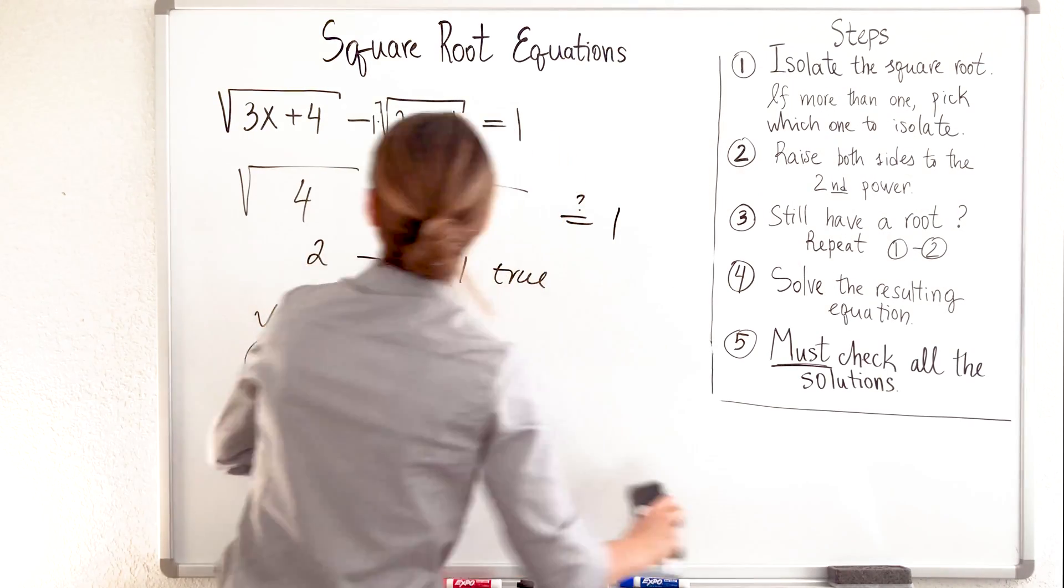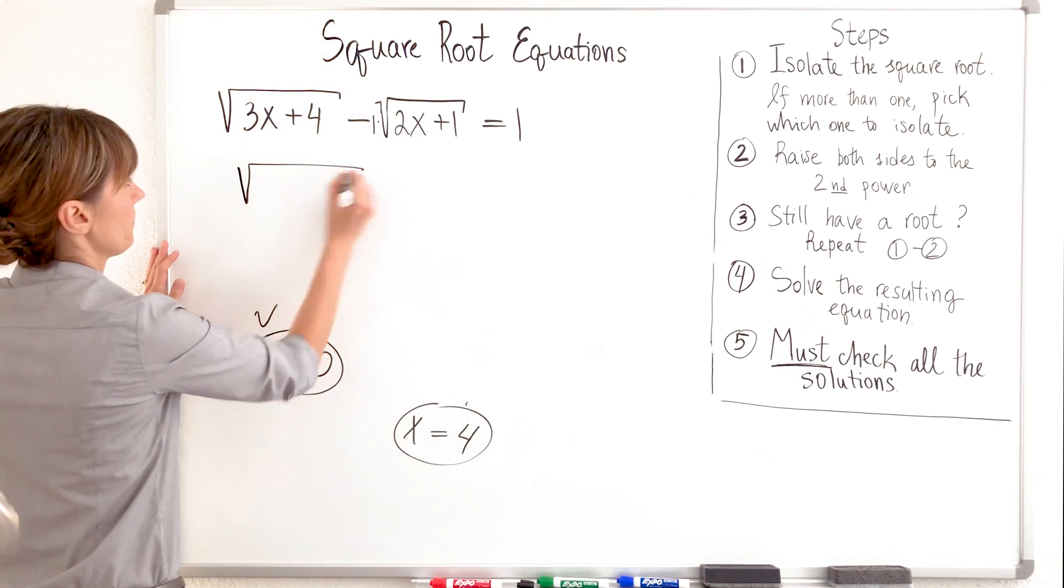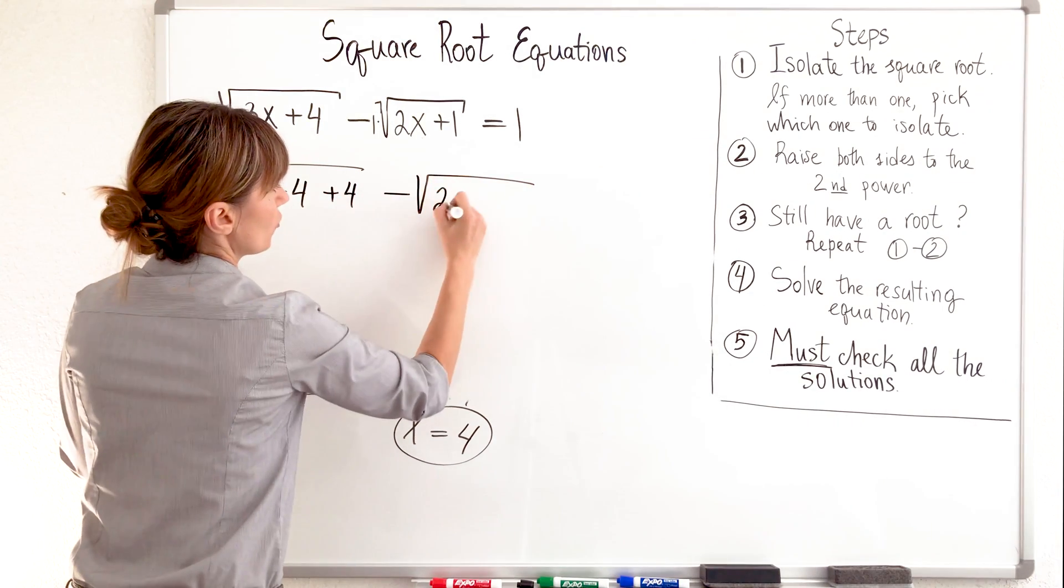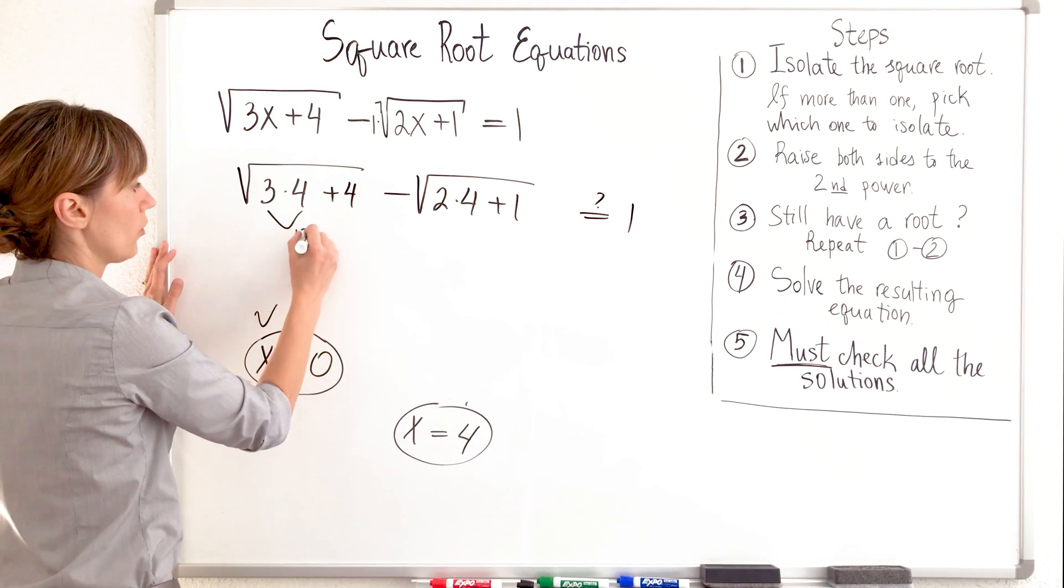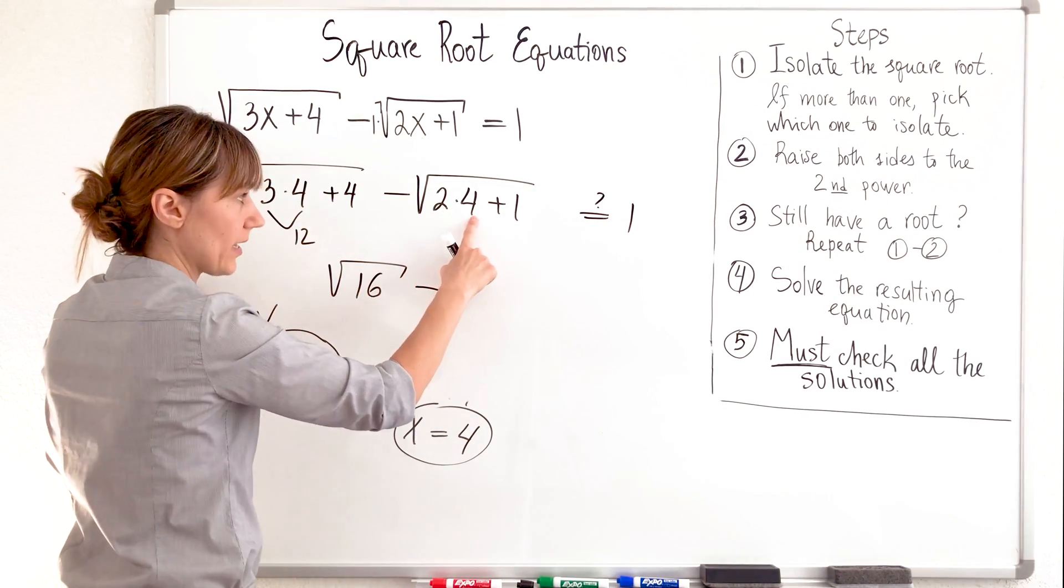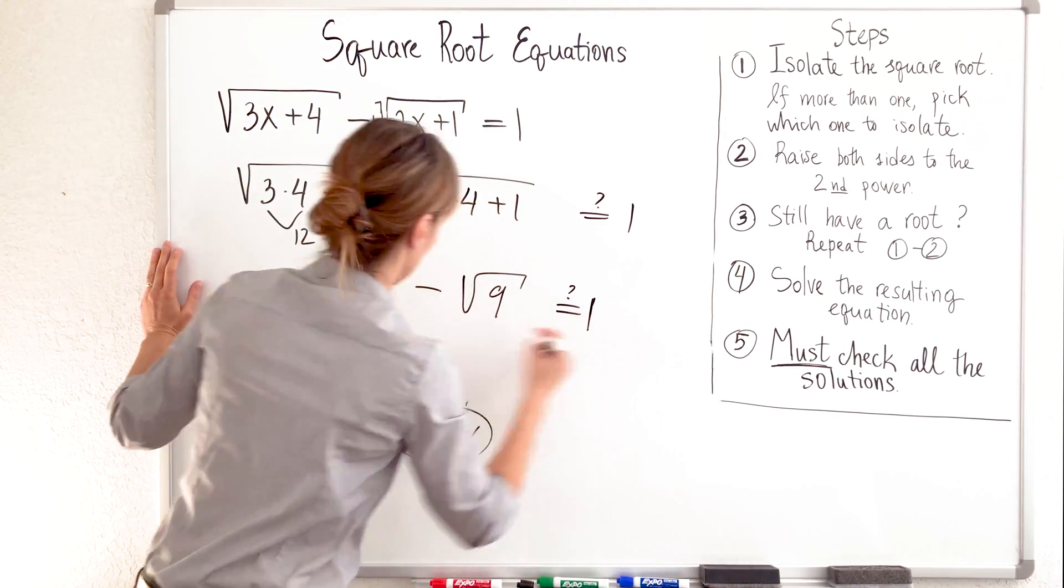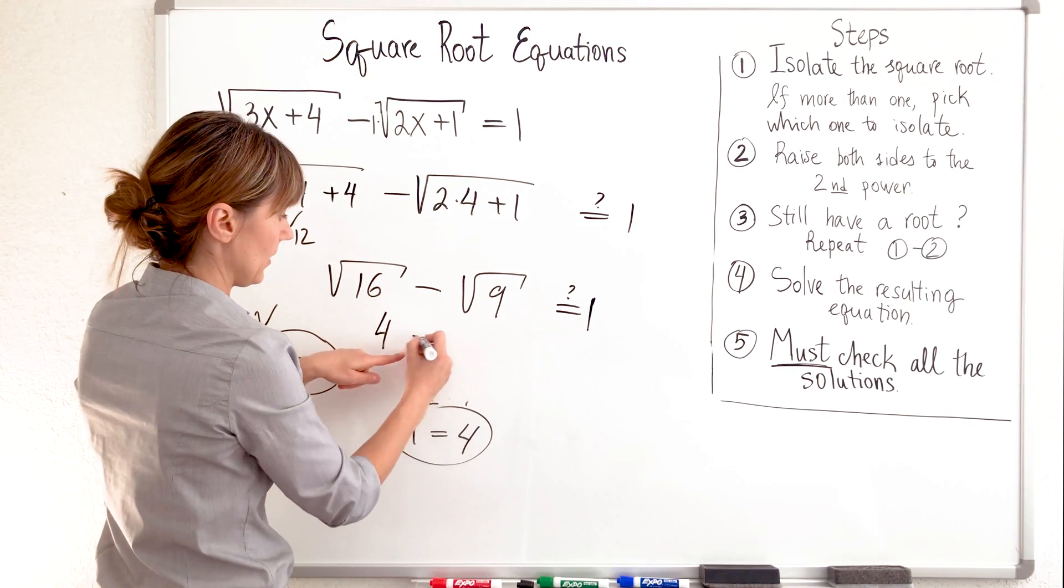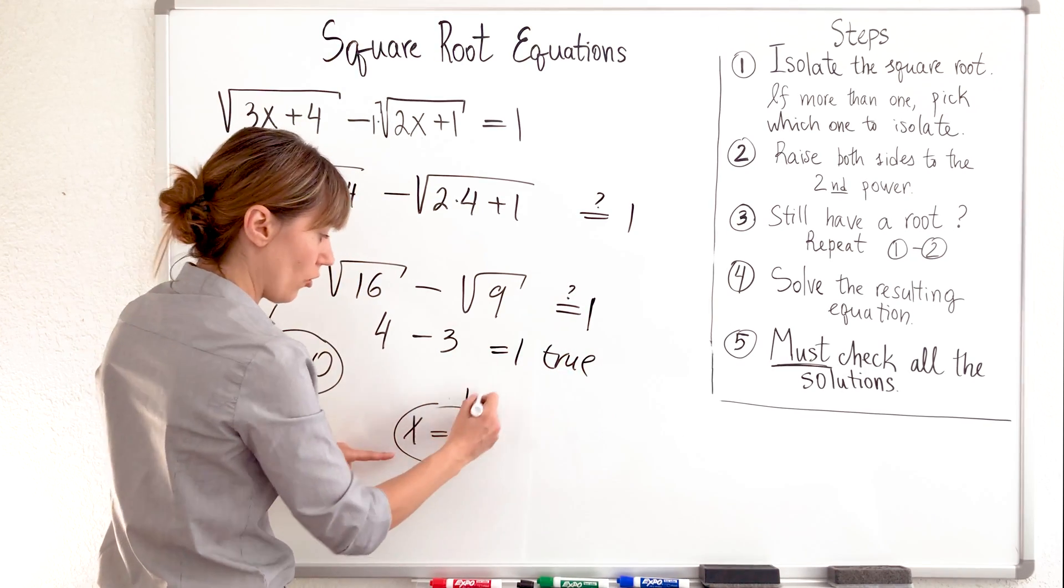Taking 4, substituting for x, substituting for x, substituting for x. 3 times 4 plus 4 minus 2 times 4 plus 1 is it 1. 3 times 4, 12 plus 4, 16, square root of 16, minus 2 times 4 is 8, plus 1, square root of 9, is it 1. Is it 1? Square root of 16, 4, minus square root of 9 is 4 minus 3, equals 1. True. It looks like my second solution also checks out. And these are solutions to our big equation.